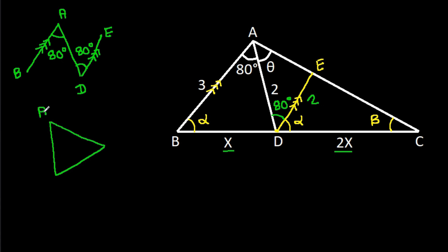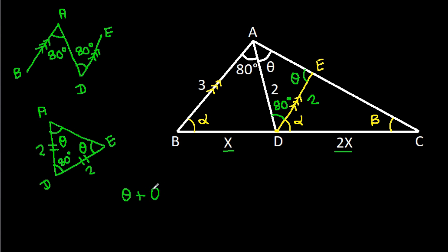And in triangle ADE, we have AD is 2 and DE is 2. That means these two sides are equal, so the base angles will be equal. This angle is theta, and this angle will also be theta. The angle at D is 80 degrees. So, theta plus theta plus 80 degrees equals 180 degrees.